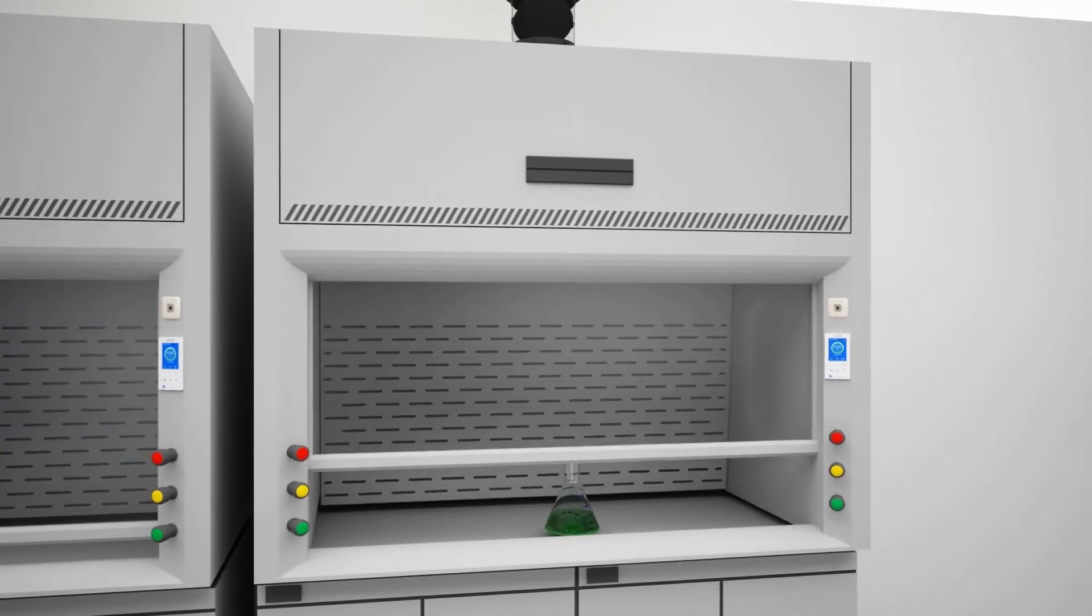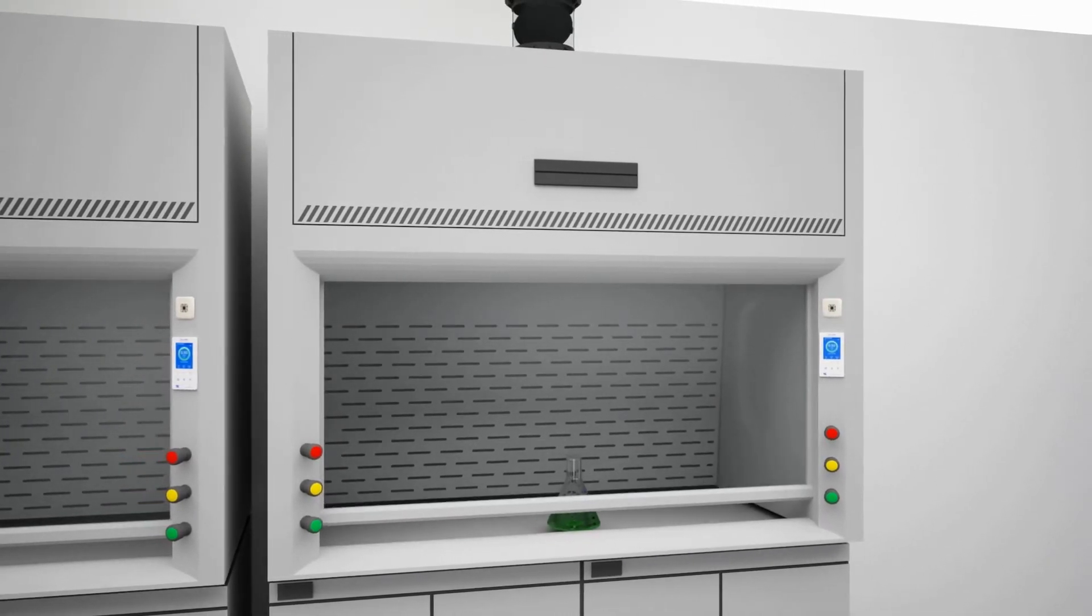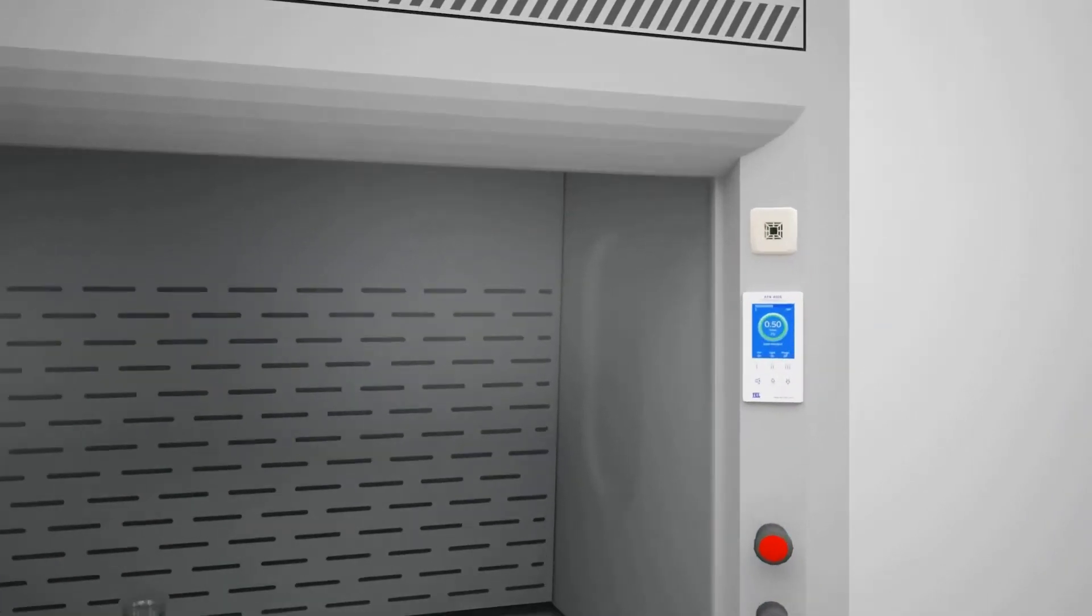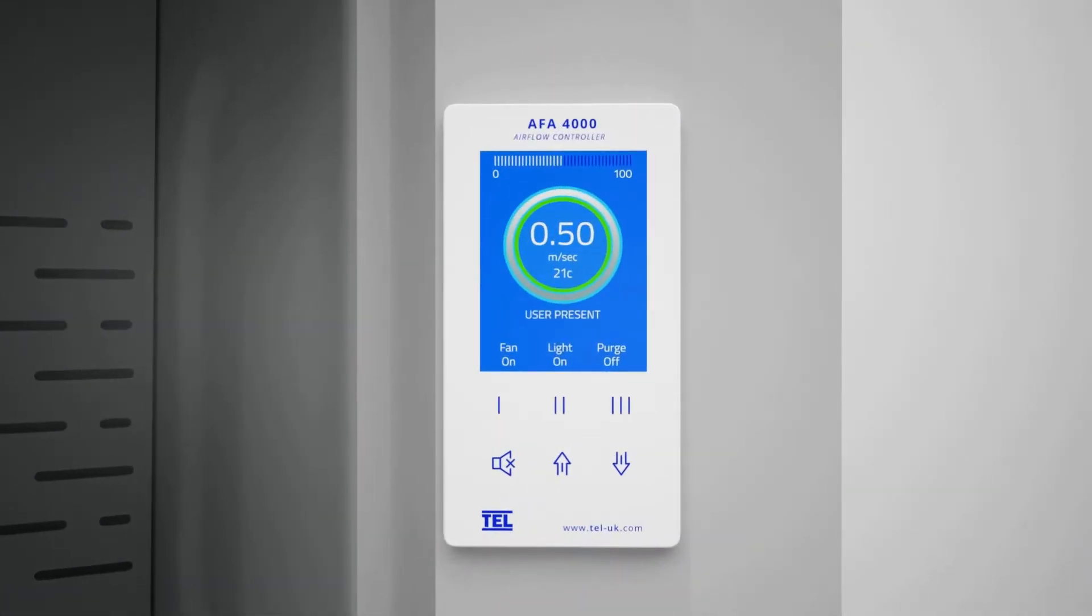By using an automatic sash controller, you can immediately increase the safety of your fume hood operators. However, during times when the operator is present, the sash can be operated manually by the up and down push buttons or by the Tiptronic touch-sensitive feature.